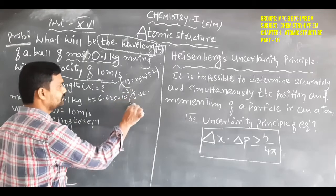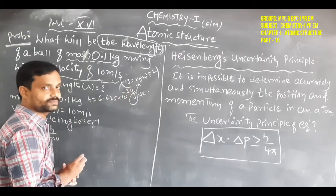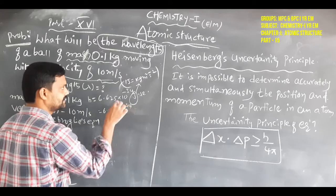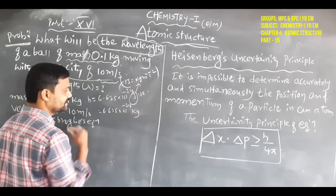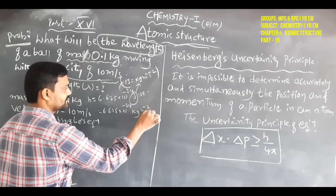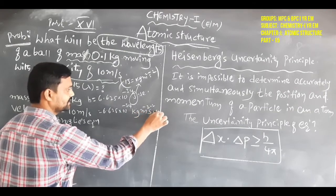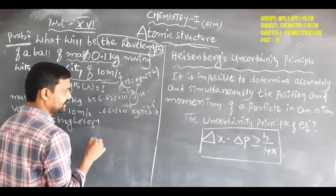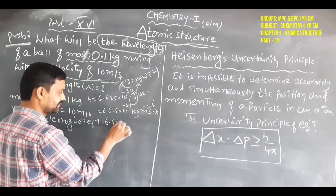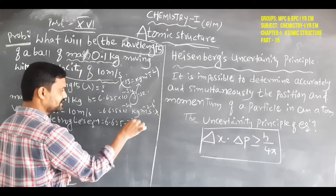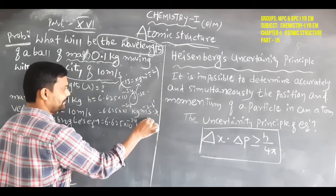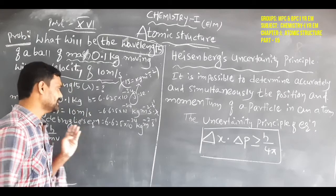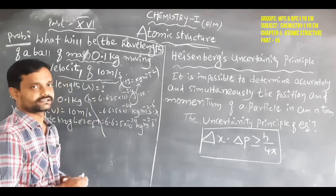One joule equals 1 kg·m²·s⁻². So joule·second converts to kg·m²·s⁻²·s, which simplifies to kg·m²·s⁻¹. Therefore, Planck's constant h = 6.625 × 10⁻³⁴ kg·m²·s⁻¹. Note that in some books Planck's constant is given as 6.626 — both values are nearly equal.